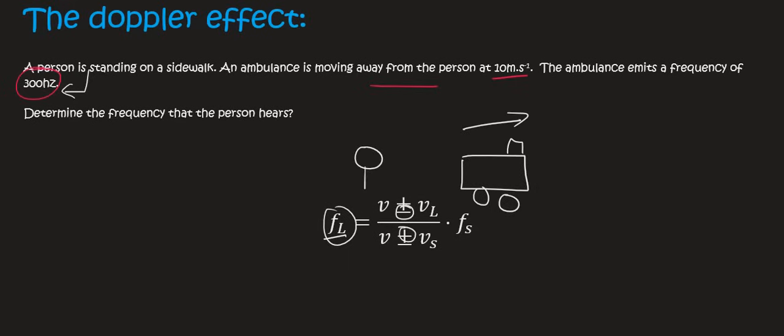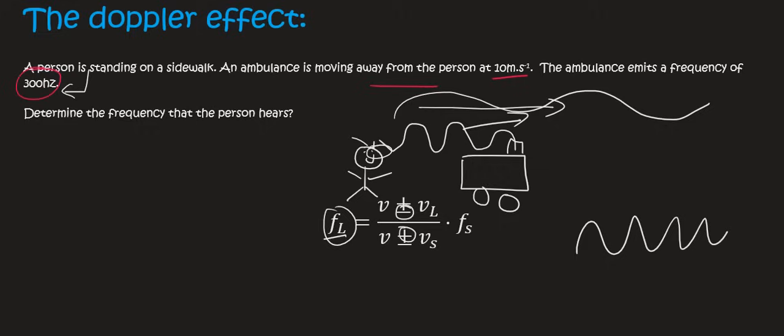You're standing over here. The siren is emitting sound waves, but as the ambulance moves away, it drags those sound waves. They hit your ear less frequently—they're getting elongated. It's only when the ambulance is coming towards you that it causes the waves to compress, and the frequency is higher.